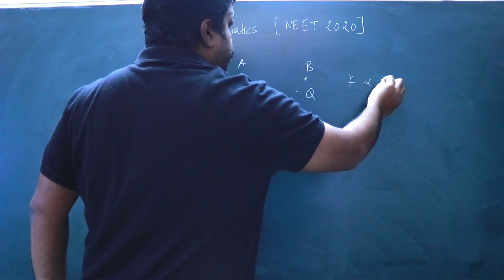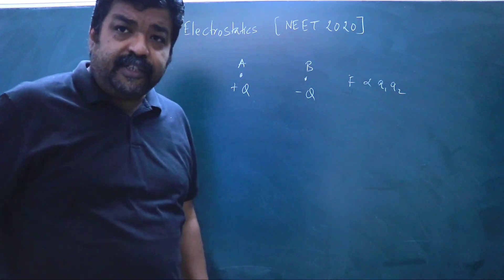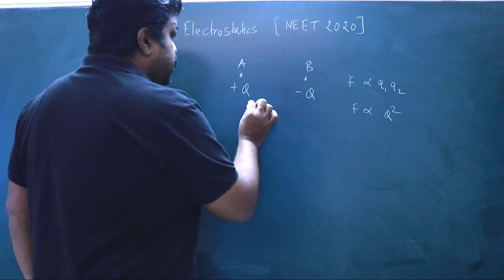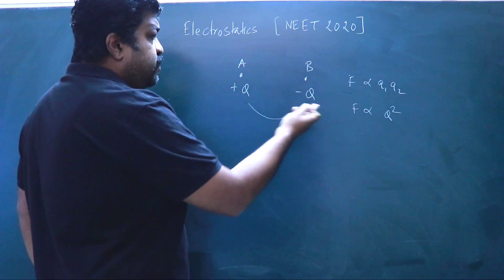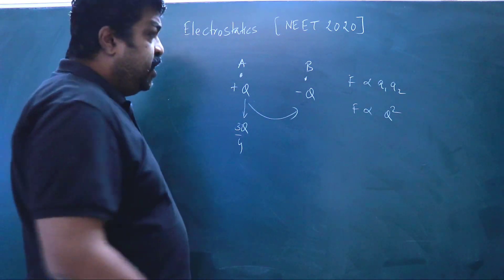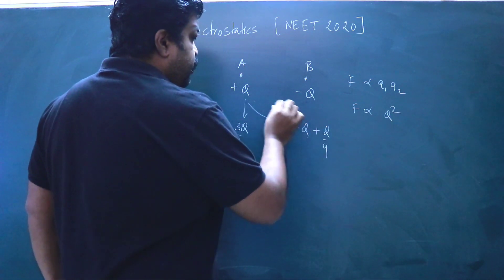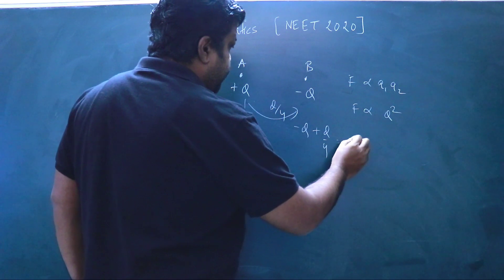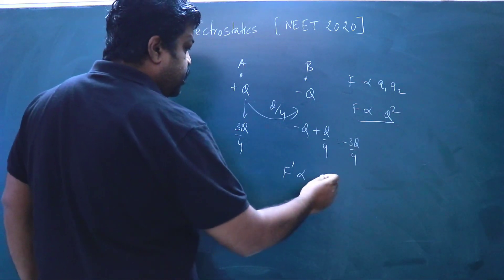The force is proportional to the product of the charges. Distance and medium are not changing, so the initial force F is proportional to Q squared. If 25% of +Q is transferred from A to B, then A retains 75%, which is 3Q/4. B had −Q and gains +Q/4, so B becomes −Q + Q/4 = −3Q/4.